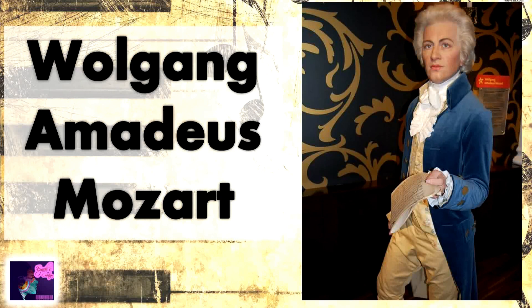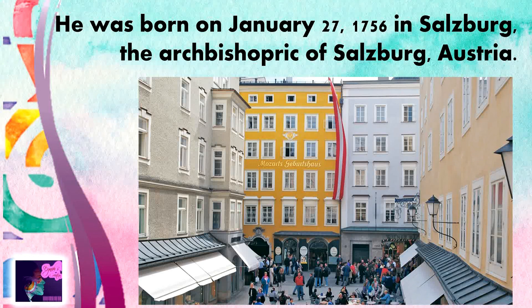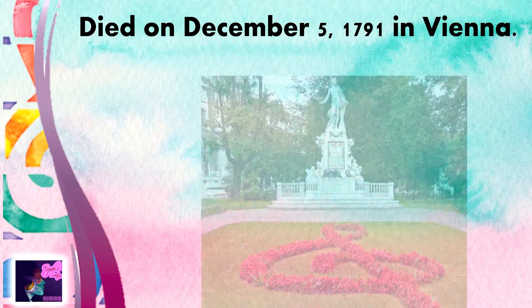Let's now proceed to our second composer, none other than Wolfgang Amadeus Mozart. Mozart was born on January 27, 1756, in Salzburg, the Archbishopric of Salzburg, Austria — said to be the Yellow House you see in the picture. He died on December 5, 1791, in Vienna, Austria, and was buried somewhere in St. Mark's Cemetery.